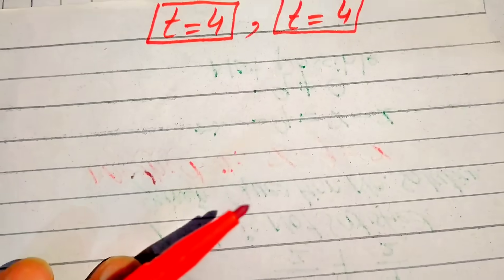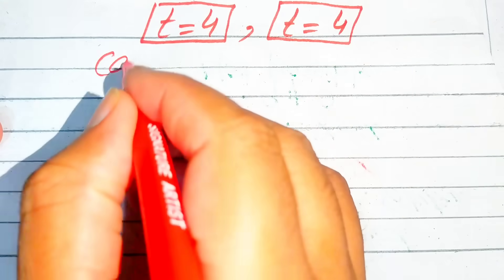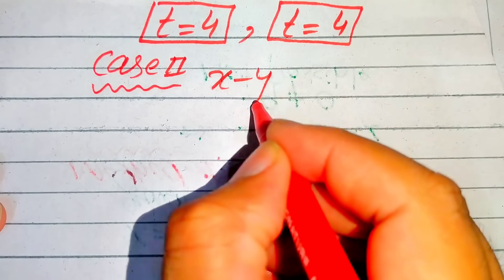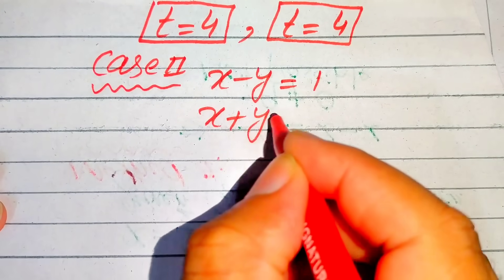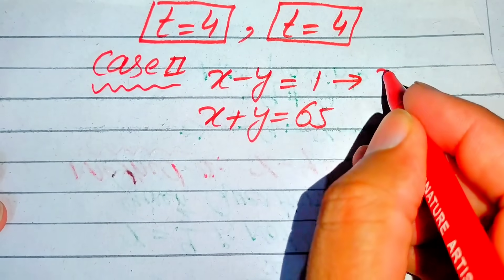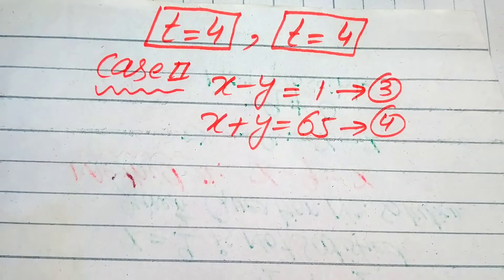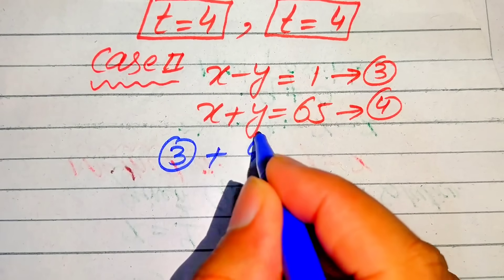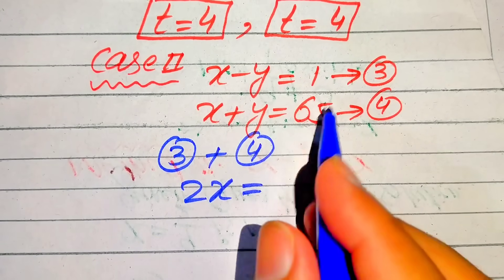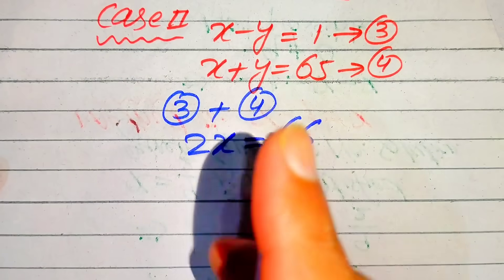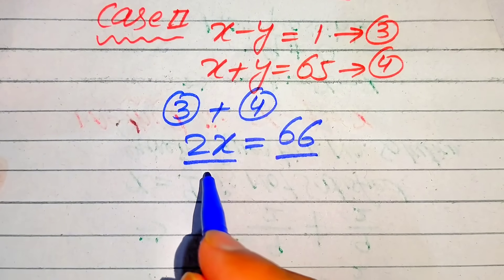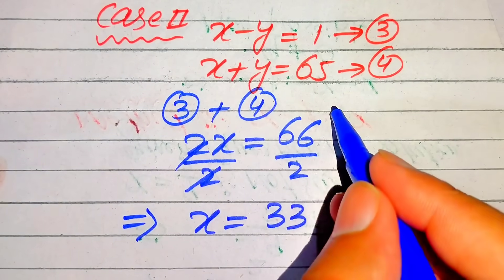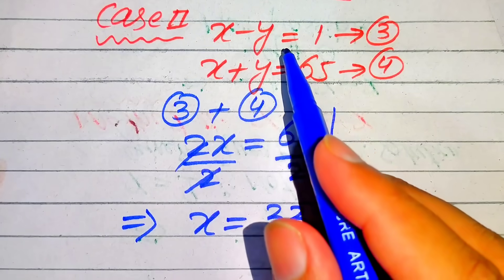In Case 2, we compare the factors with the other valid pair: x minus y equals 1 (equation 3) and x plus y equals 65 (equation 4). Adding equations 3 and 4, we get 2x equals 66. Dividing both sides by 2 gives x equals 33. We substitute x equals 33 into equation 3.